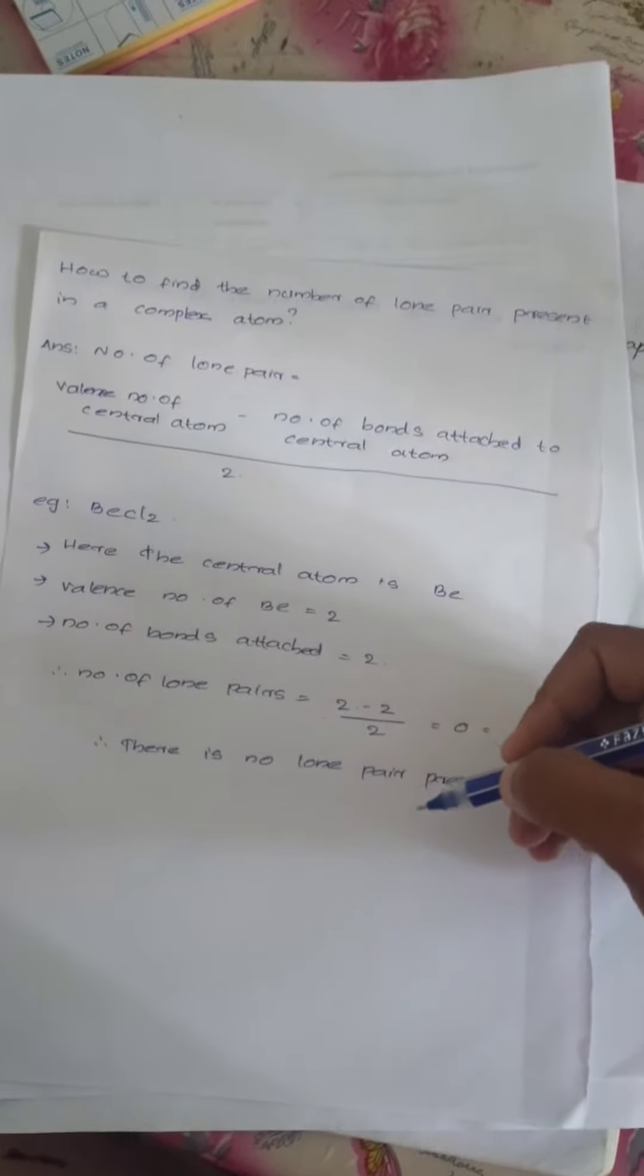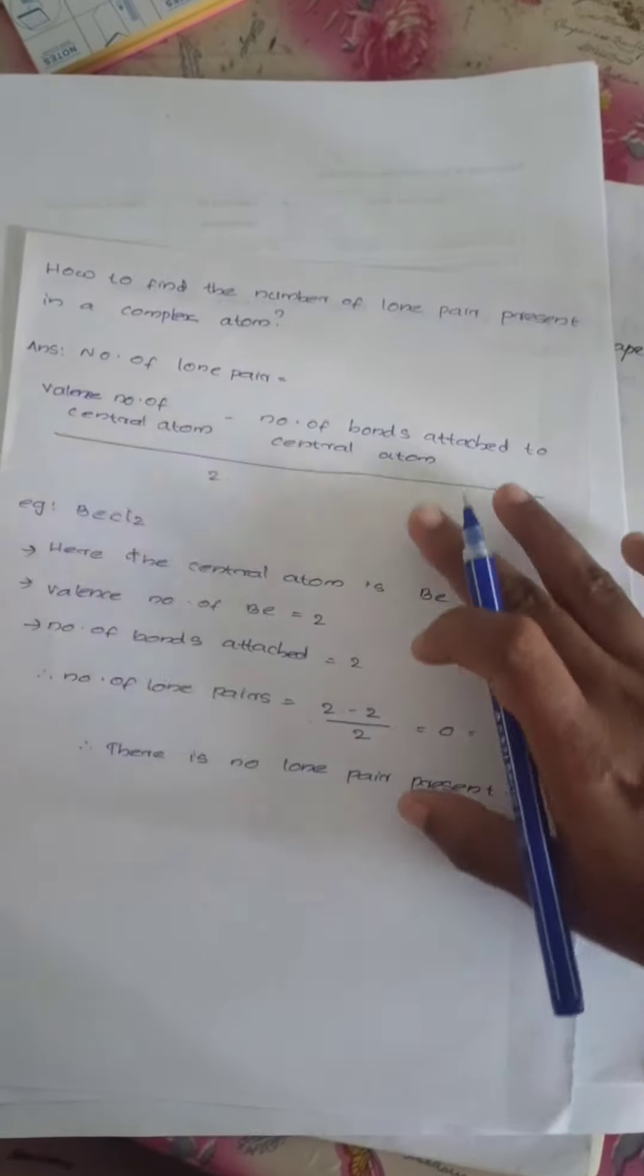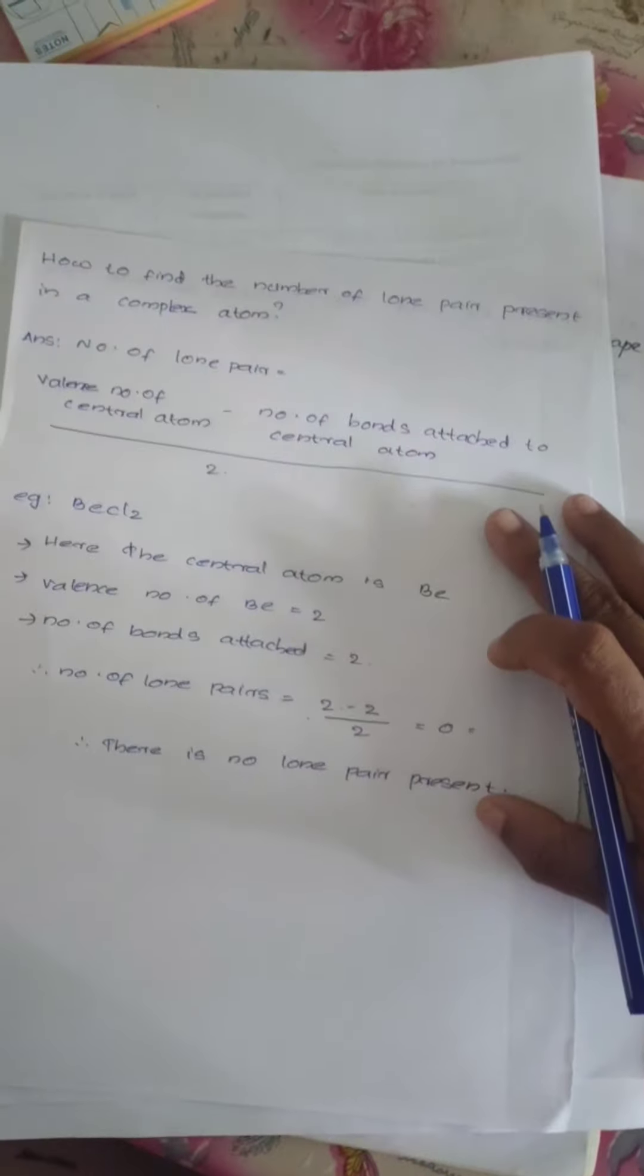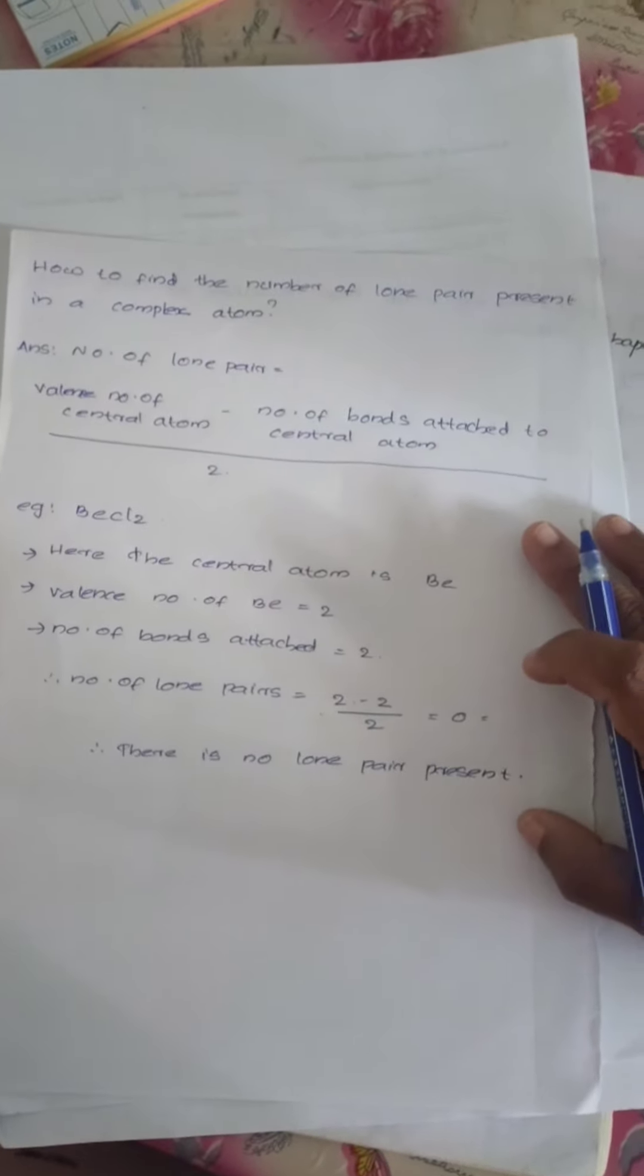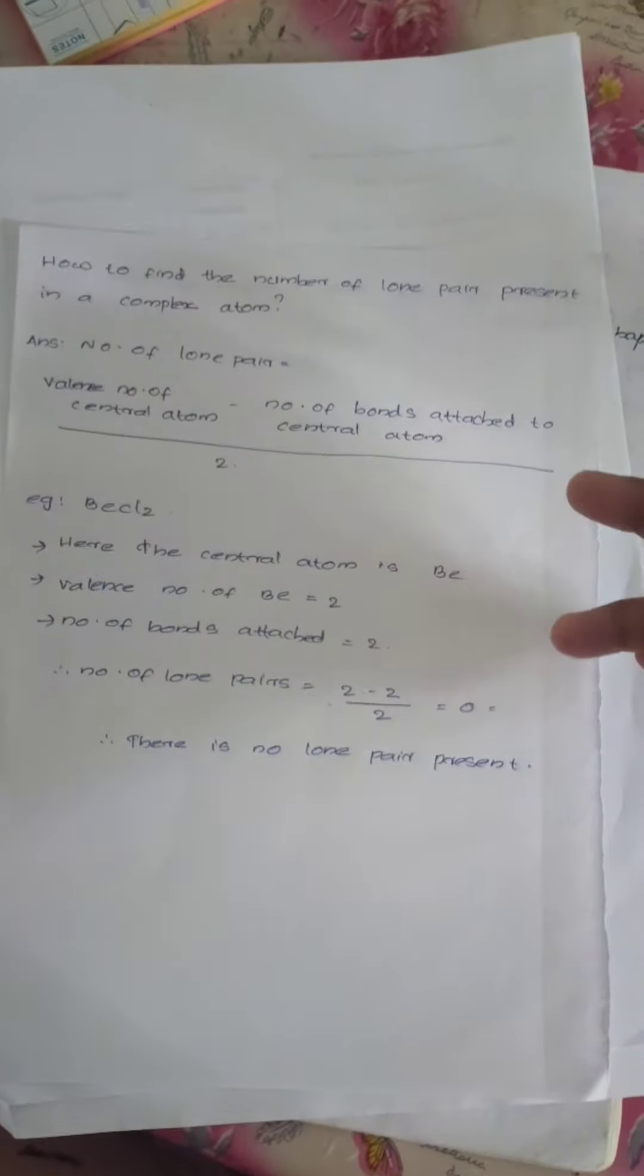So, there is no lone pair present in this complex. This way we can find the number of lone pairs present in any type of complex.